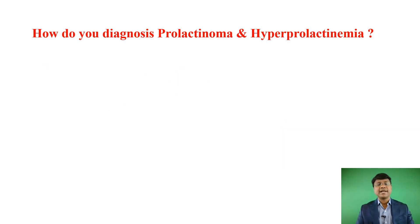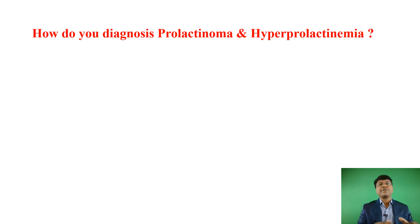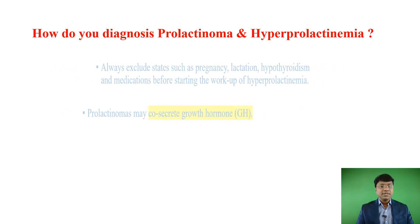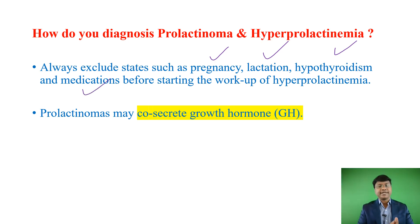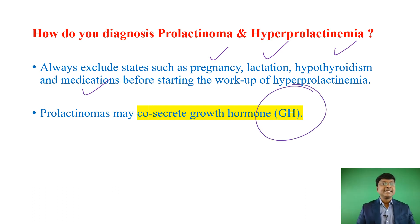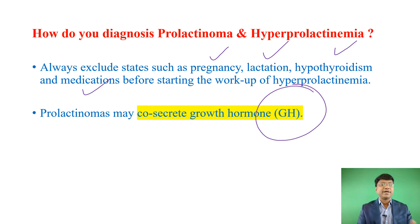How do you diagnose prolactinoma and hyperprolactinemia? The first line investigation is prolactin levels, but you must exclude other causes before concluding it is prolactinoma — such as pregnancy, lactation, hypothyroidism, and medication. Also remember that prolactin may be co-secreted with growth hormone in mammo-somatotroph type pituitary adenomas — mammo being prolactin, somatotroph being growth hormone.